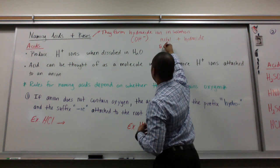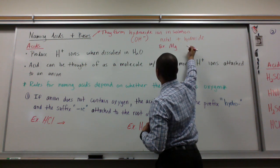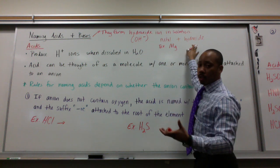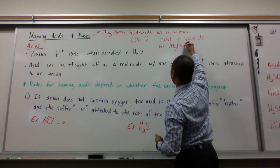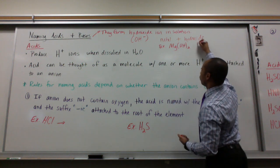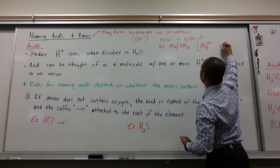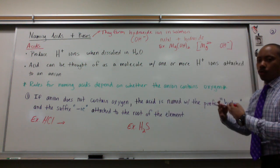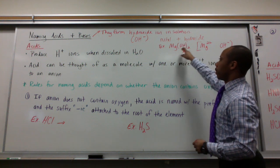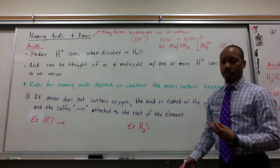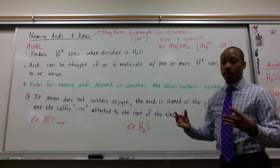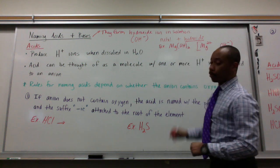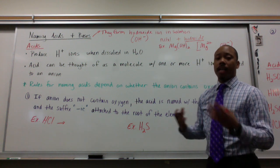An example would be magnesium. Magnesium is the metal and hydroxide is the basic portion, giving us Mg(OH)₂. This came from Mg²⁺ and OH⁻ coming together to form Mg(OH)₂. This is magnesium hydroxide — this is a base. Some compounds we've already encountered are bases, especially the ones that have a hydroxide ion present in solution.